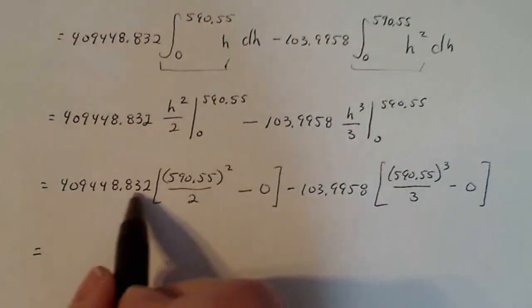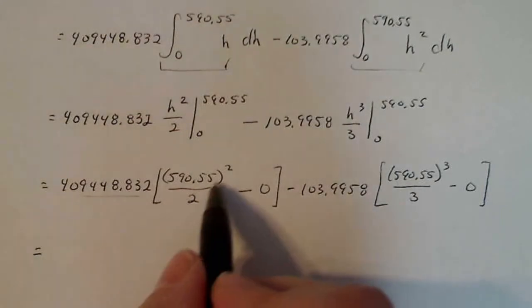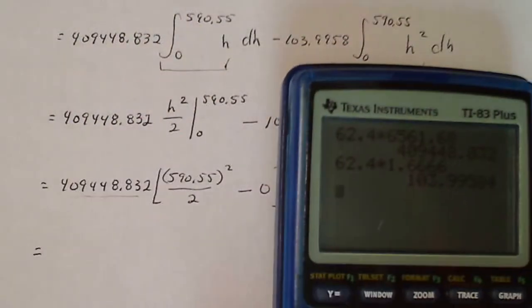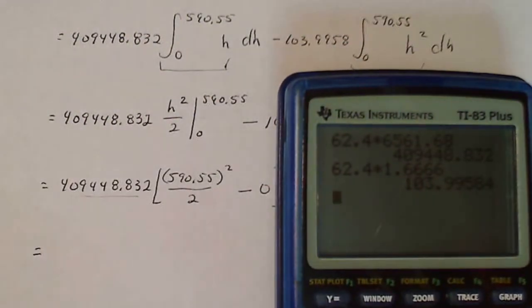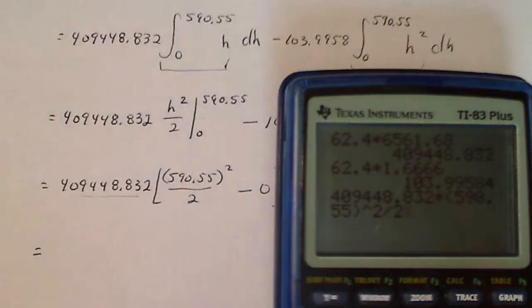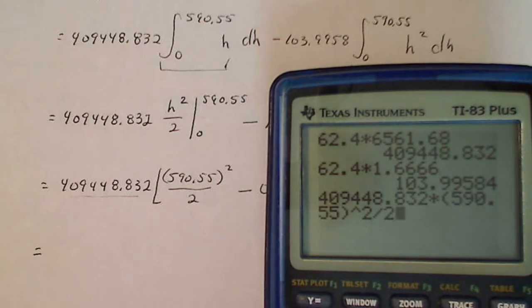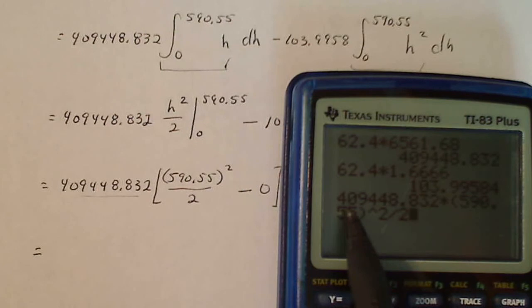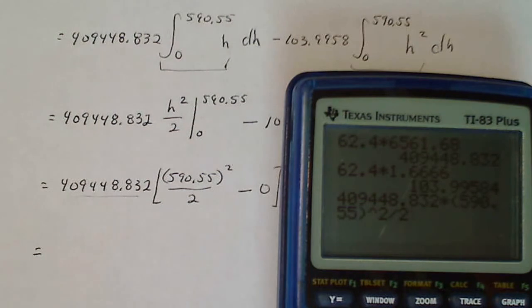I have to distribute this to both pieces so I'm going to put this number times this number in my calculator here and then write down the resultant number, 409448.832 times 590.55 squared divided by two. It looks like that'll work. It'll take 590 squared and then it'll multiply this number by the 590 squared and then divide the whole thing by two, which should give me the appropriate number.